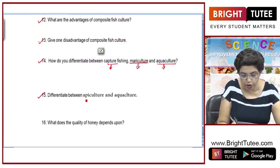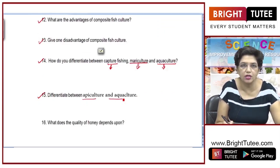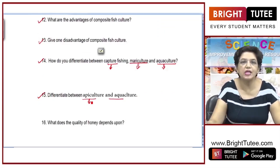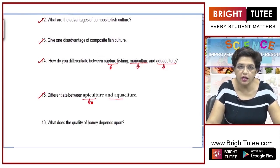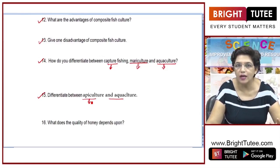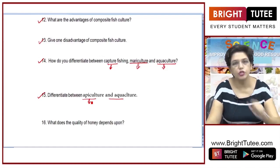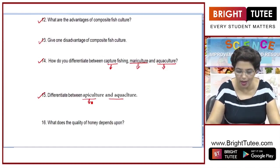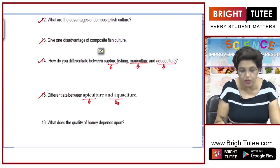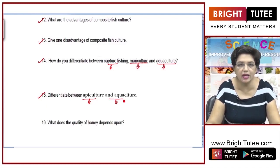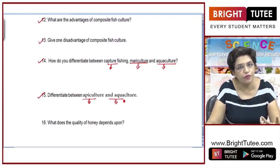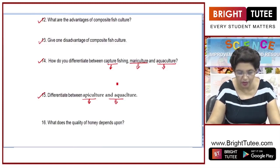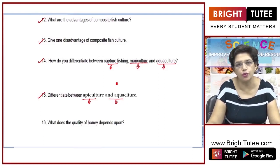Next question: differentiate between apiculture and aquaculture. Apiculture means rearing and taking care of, and promoting the growth of, bees to collect honey and beeswax. On the other hand, aquaculture means rearing of fish to obtain meat. So these are two different practices to obtain two different food products.